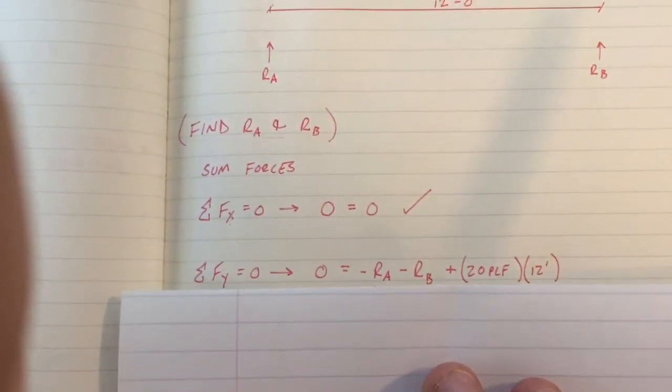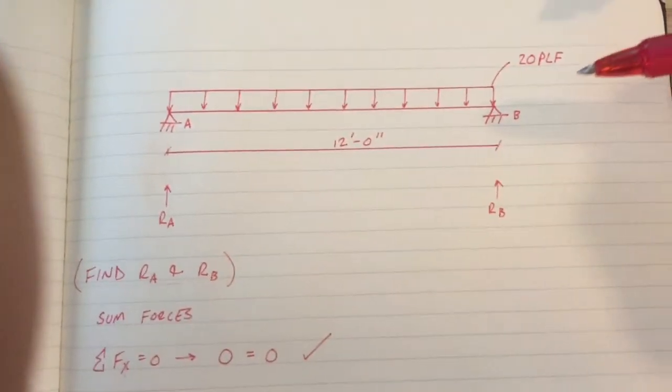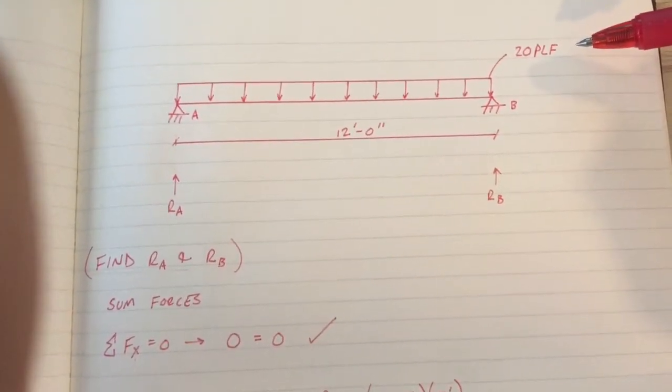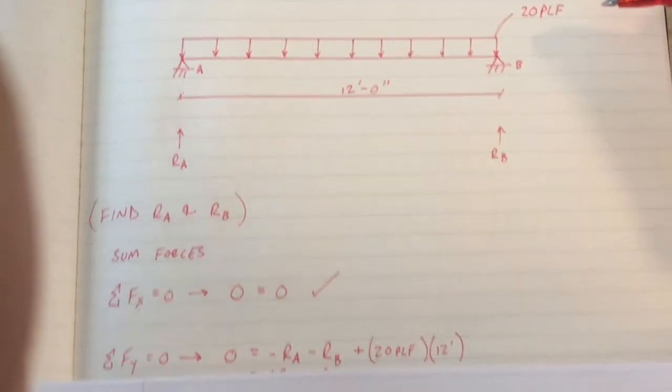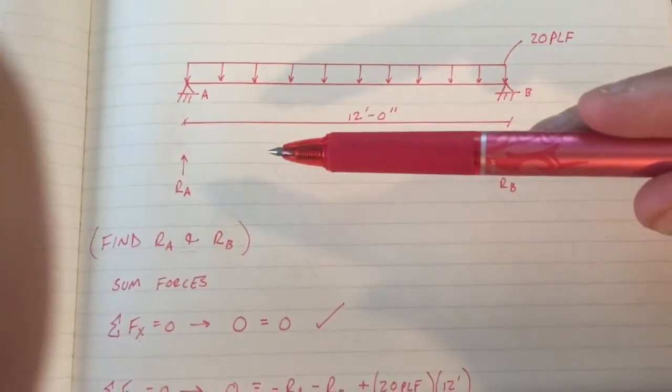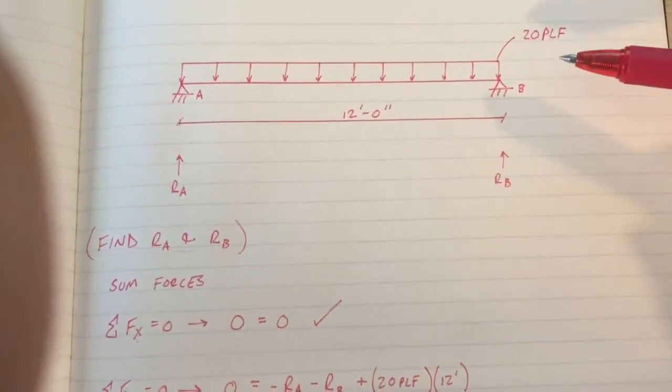Next we need to take summation of forces in the y-direction. As shown above, we have this 20 pounds per linear foot vertical force which is acting in the y-direction, and we also have reaction A and reaction B acting against that vertical force.